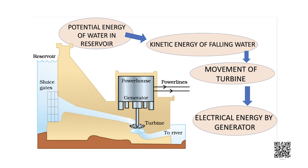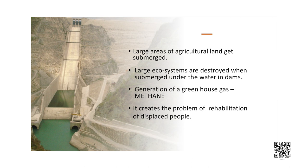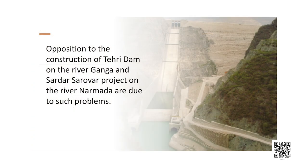We would not have to worry about hydroelectricity sources getting used up the way fossil fuels will one day. However, the construction of big dams has certain problems: large areas of agricultural land get submerged, large ecosystems are destroyed, and vegetation submerged under anaerobic conditions produces large amounts of methane — also a greenhouse gas. There is also the serious problem of rehabilitation of displaced people. Opposition to the Tehri Dam on the river Ganga and the Sardar Sarovar Project on the river Narmada stems from such problems.